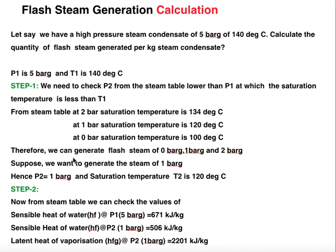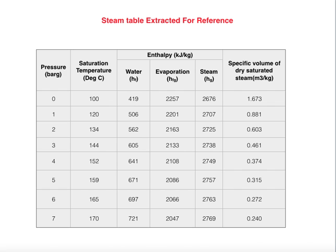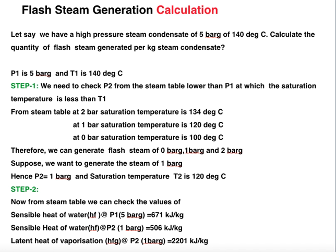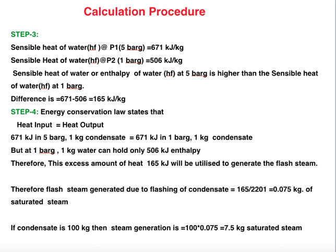In step 2, from the steam table we read the sensible heat of water at P1 and P2, and the latent heat of vaporization at P2. At 5 bar gauge (P1), the sensible heat HF(P1) is 671 kJ/kg. At 1 bar gauge (P2), the sensible heat HF(P2) is 506 kJ/kg, and the latent heat of vaporization HFG(P2) is 2201 kJ/kg.